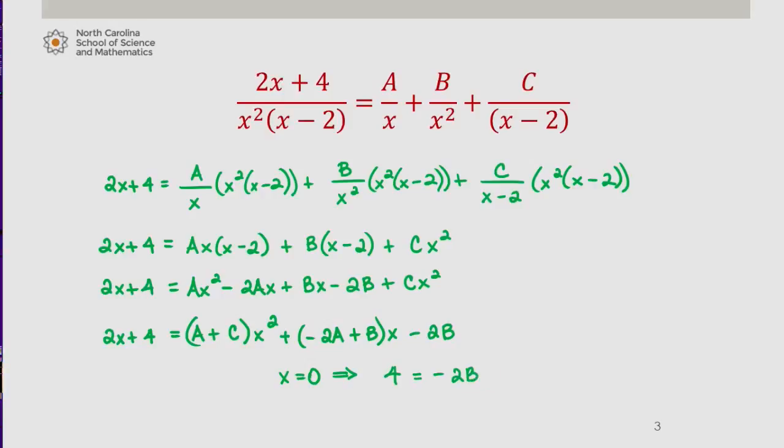So what we've done is chosen a strategic value for x that would allow us to identify one of the three letters. This then tells us that B is equal to negative 2. We're going to hold on to that.